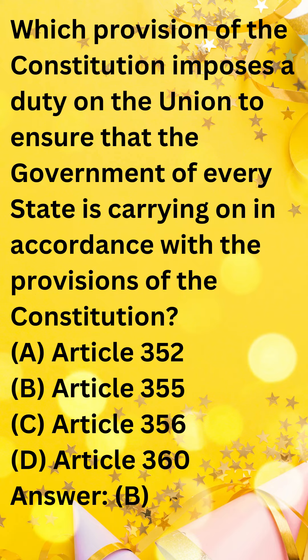The other options are incorrect. Article 352 deals with the declaration of emergency by the President. Article 356 deals with the President's rule, which can be imposed in a state if the President is satisfied that the government of the state cannot be carried on in accordance with the provisions of the Constitution. Article 360 deals with the revocation of an emergency.